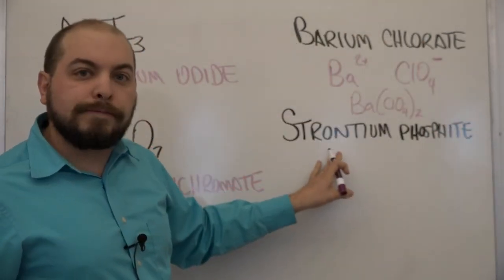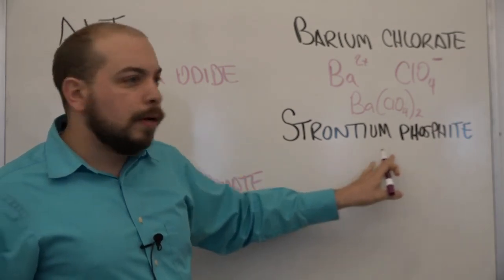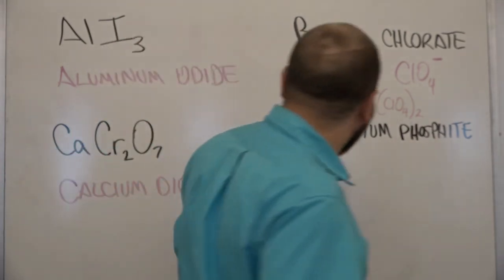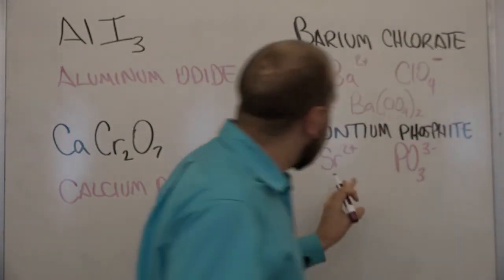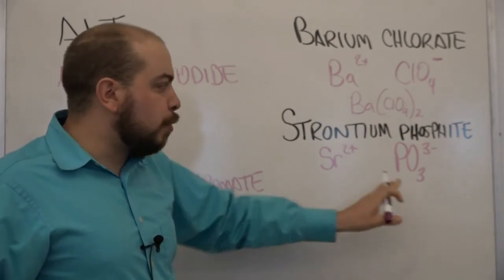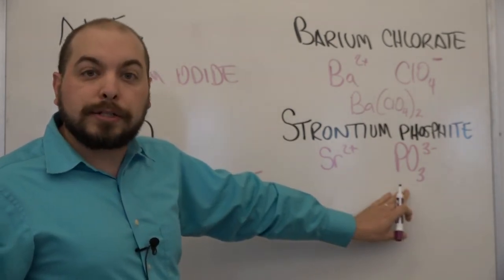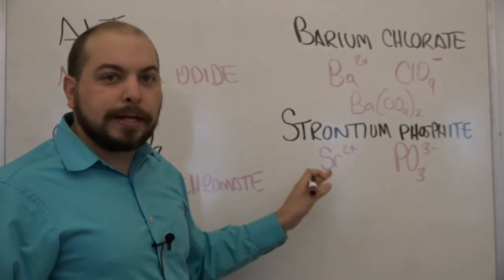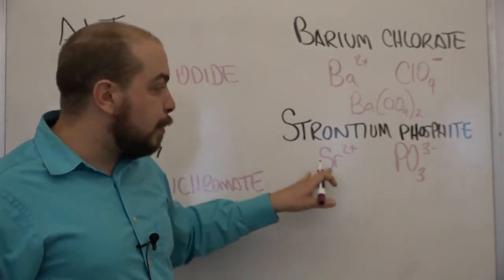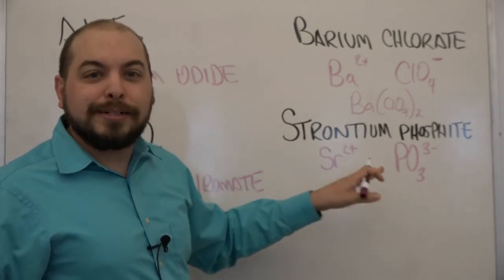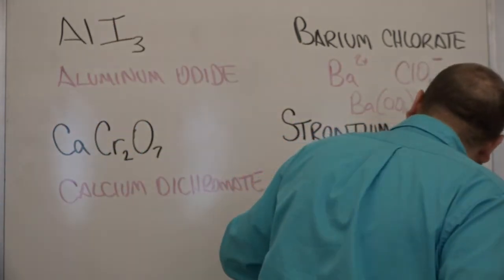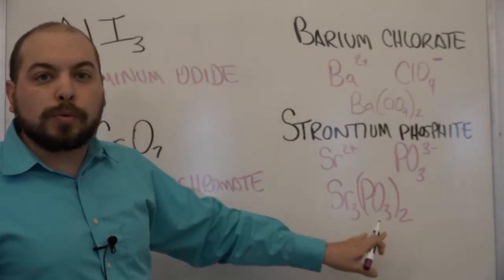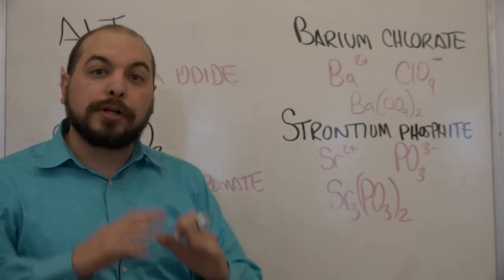Strontium phosphate, strontium SR, phosphite, P-O-3, strontium has a charge of plus two whereas phosphite has a charge of minus three. Criss-cross method tells us that we are going to have SR-3, P-O-4, sorry, P-O-3-2. Again make sure you include the parentheses around any polyatomic ions when there are going to be multiple.